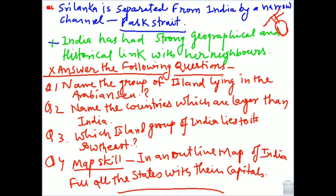Question number one: name the group of islands lying in the Arabian Sea. The answer is Lakshadweep. Question two relates to the Bay of Bengal — the island group there is the Andaman and Nicobar Islands.